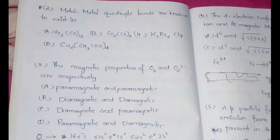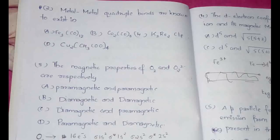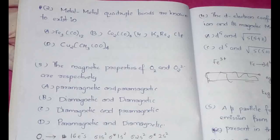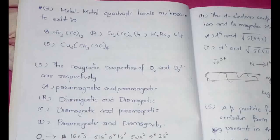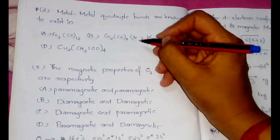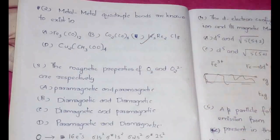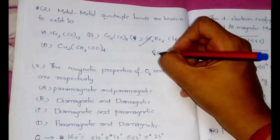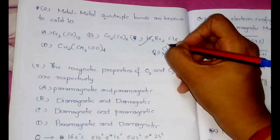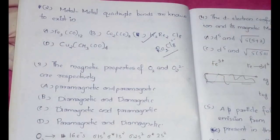Now the second question: metal-metal quadruple bonds are known to exist in. This is a very important question and this has been repeatedly asked from all exams including PG entrance and even CSIR NET and GATE. Just memorize this: the quadruple bonds are found in this particular compound, that is Re2Cl8 2- or we can write it as K2Re2Cl8.